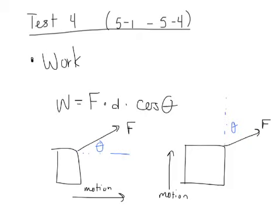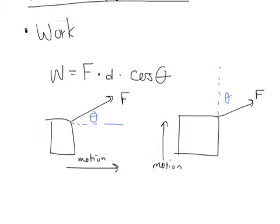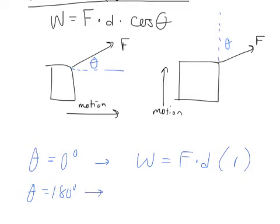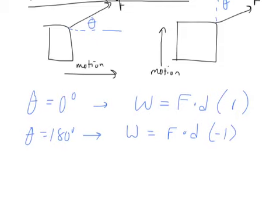That's our special cases. When theta is zero, cosine of zero is just one, and the equation reduces to just F times D. So when theta is zero degrees, the equation becomes W equals F times D. When theta is 180 — you can check on your calculator, type in cosine 180 and it gives you negative one — it becomes work equals force times distance times negative one.